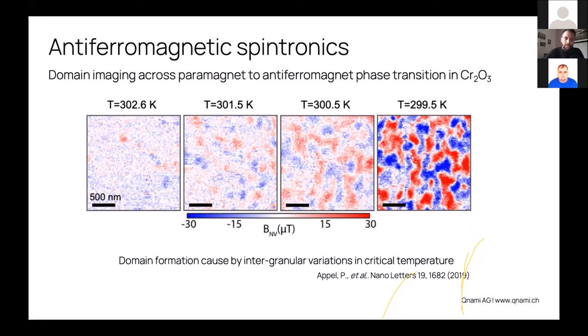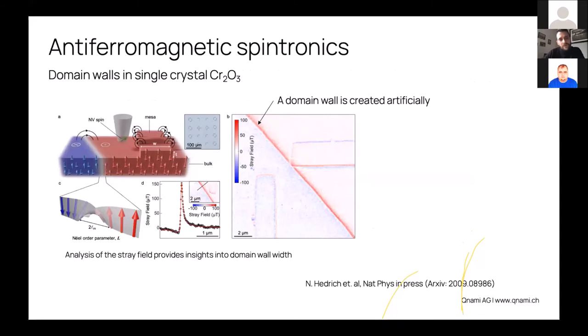You can also see that the dimension, the lateral dimensions of those domains, are extremely small, so you also need a very high resolution on top of the extreme sensitivity. More recent results on similar material, but this time a single crystal—in this case, in a single crystal you typically only have one domain. In this work, the author artificially created this domain wall across the sample through a combination of magnetic and electric fields, and then using NV magnetometry they can start and measure this domain wall. In particular here you see a line cut which is providing some insights into the domain wall width—that's a very important parameter to characterize the exchange energy.